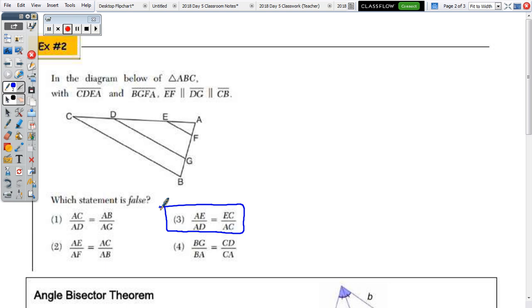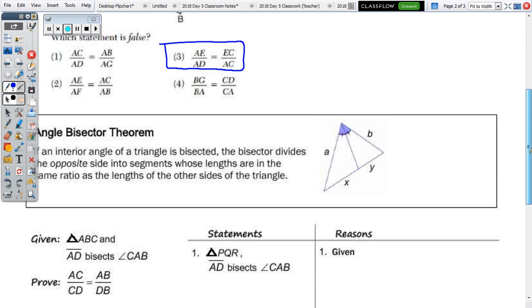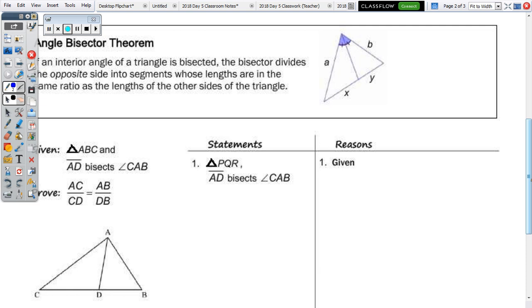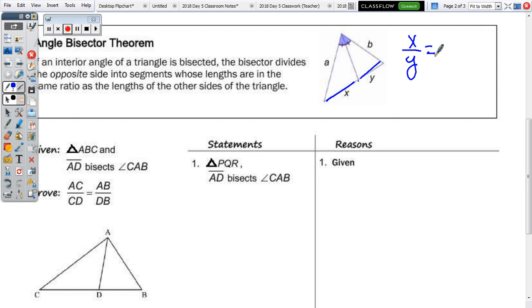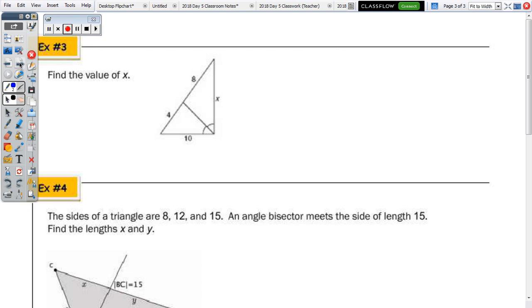The angle bisector theorem. I think I'm going to do this the same way I did this with the girls after school yesterday. We're going to go over this theorem and actually do the examples on the last page before we go through and do the proof. So, if we read the theorem, it says that if an interior angle of a triangle is bisected, the bisector divides the opposite side into segments whose lengths are in the same ratio as the length of the other side of the triangle. So, since I did A to X, that would be equal to A to B.